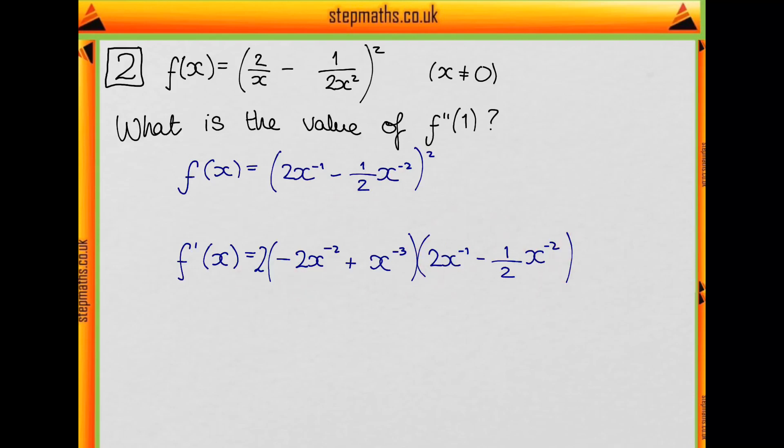So let's just try and simplify this down a bit now. Okay, so I've combined some different things here. So I've done minus 2x to the minus 2 times 2x to the minus 1. Remember, when we multiply powers, we're going to add the powers. So we do minus 2 plus minus 1, which is minus 3.